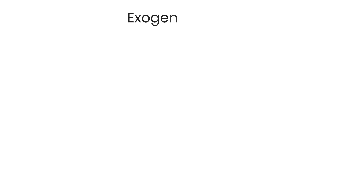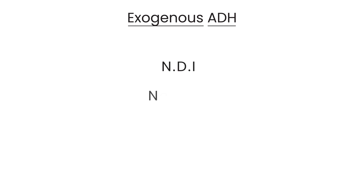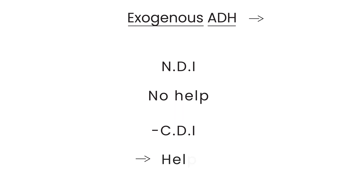The next step is to give exogenous ADH. In nephrogenic diabetes insipidus, there is no response — no change — because the kidney is unresponsive. Interestingly, giving exogenous ADH does help central diabetes insipidus, and there is a separate video about that on the YouTube channel.